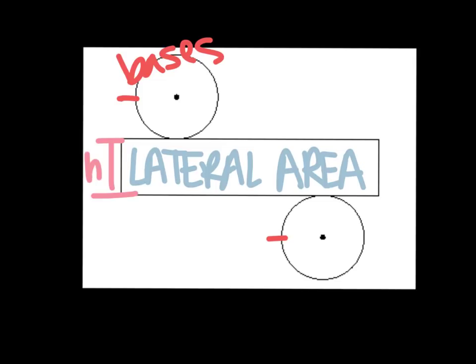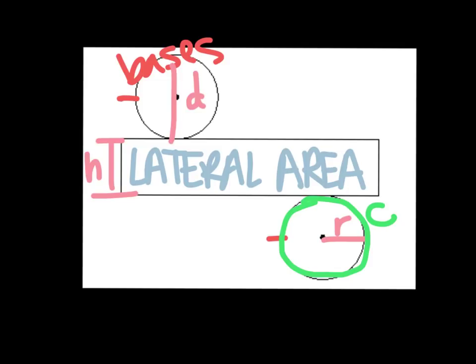On the circle, that's where we can find our radius and also our diameter. And in this circle we have circumference, which is the distance around the outside. When we unroll that lateral area, it's actually measuring your circumference as well — that's your circumference all unraveled.